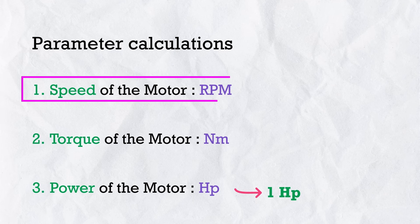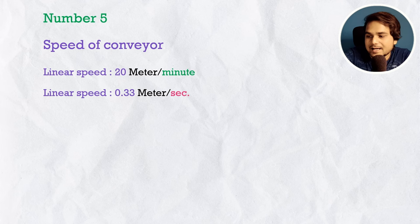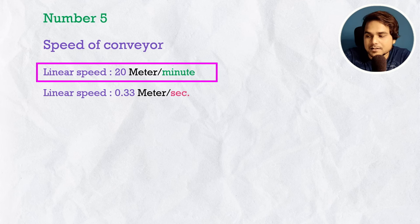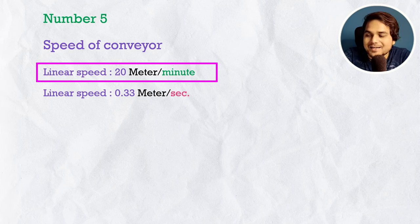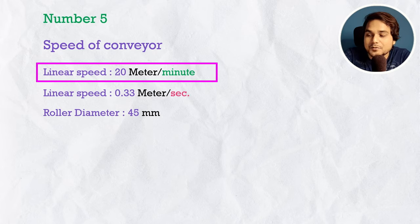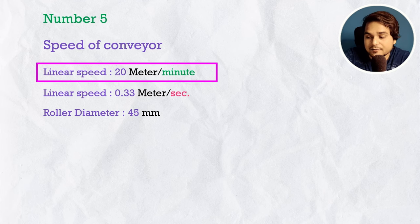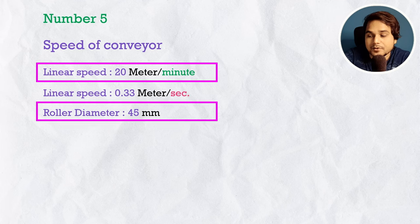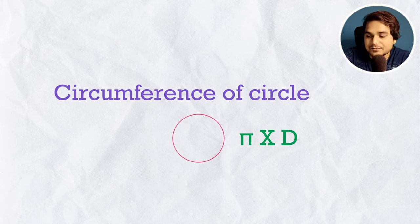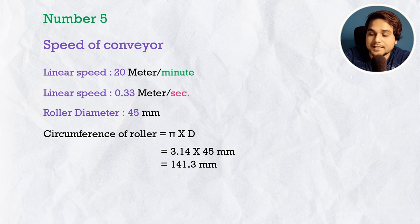Now we must calculate the rotational speed of the motor in RPM, because motors come with different combinations of speed and torque for the same horsepower. We have the belt linear speed of 20 m/min and need to convert it to rotary speed. For that we need the driving roller diameter — for example, 45 mm. First, calculate the roller circumference: π × d = 141.3 mm = 0.1413 m.